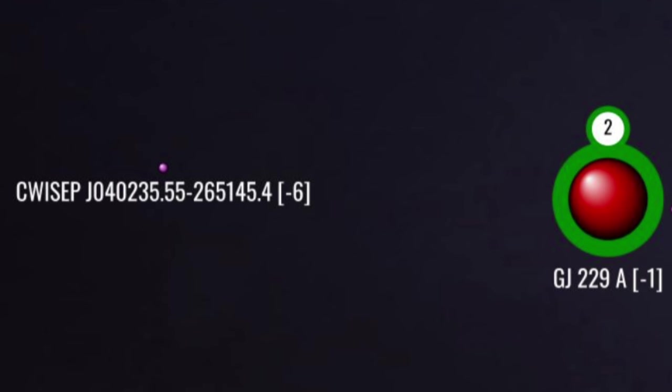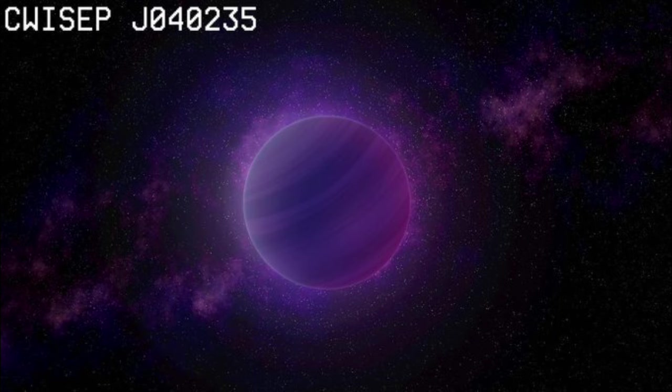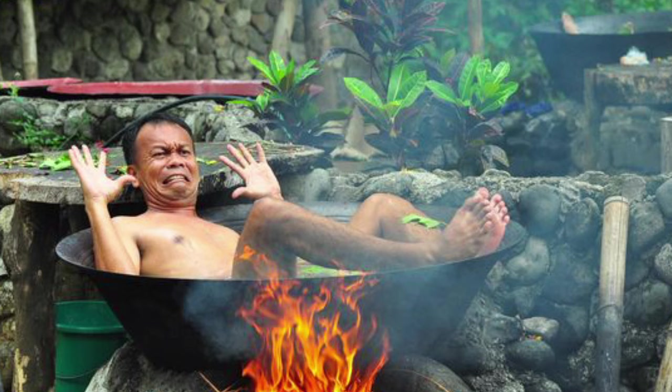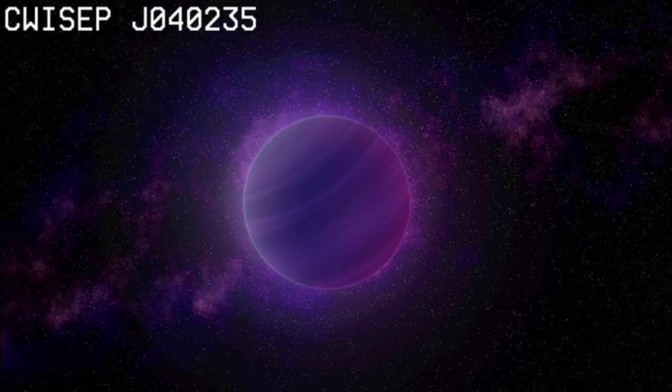Rimward and 5 parsec south, we arrive at CWISEP J040235, a brown dwarf of exceptional coldness. Its surface temperature is just 93 degrees Celsius, a temperature some more insanely inclined people have bathed in. To be that cold, it must be old, though precisely how old, I do not know.